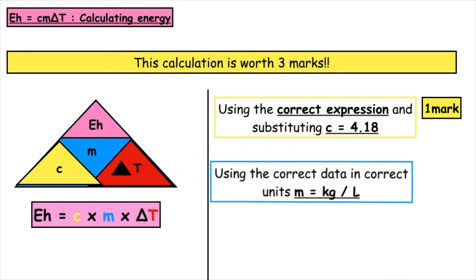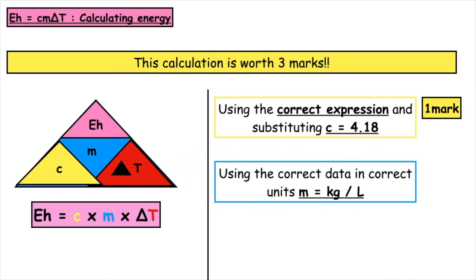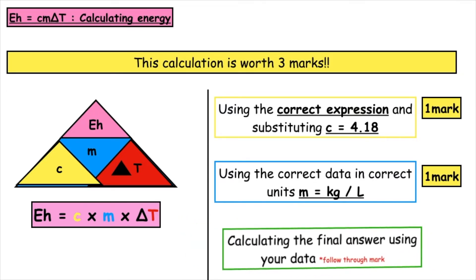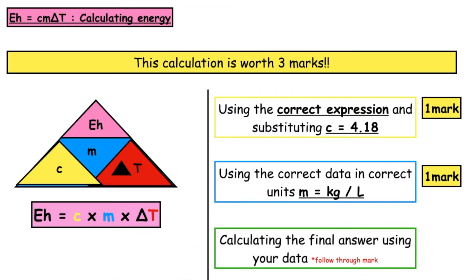The second mark is for using the correct data and the correct units, so that's making sure, for instance, that we change the mass of water into litres before substituting it into an equation. The third mark is for calculating your final answer using all of your substituted data. Sometimes if you lose a mark earlier, you will get a follow-through mark for using the numbers you've put into your calculation.